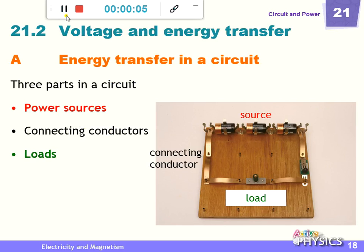Chapter 21.2: voltage and energy transfer. Last chapter, 21.1, we covered the definition of current, the types of circuits — open circuit and closed circuit — and the measuring device, which is the ammeter. In this topic, we will focus on voltage, the meaning of energy transfer, and the voltmeter. We will consider all of these in this session.